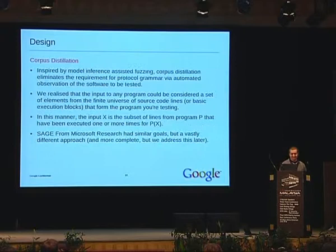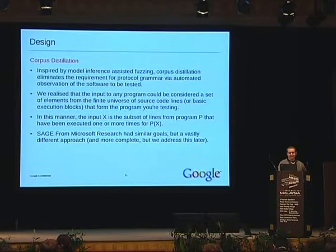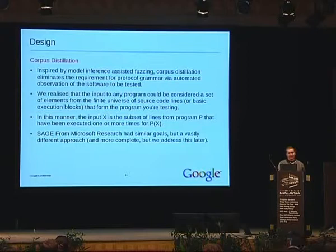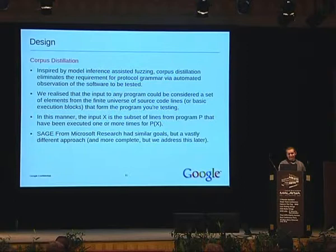The idea I've been starting with is called corpus distillation. In spite of the idea of inference-assisted fuzzing, corpus distillation basically attempts to rebuild the protocol specification just by observation of the software. The realization that brought this on was that if you consider any input to be basically just a set of elements from the universe of source code lines that make up the program, you can define any input as the set of source code lines it touches as it's processed. Using this idea, you can apply interesting set theory and do some cool stuff with it.